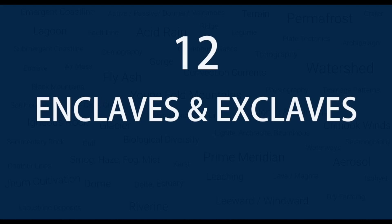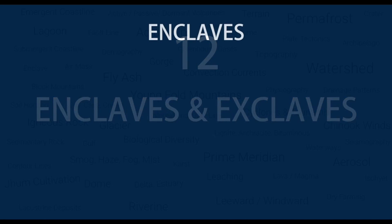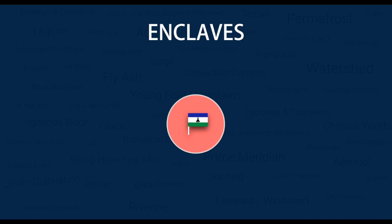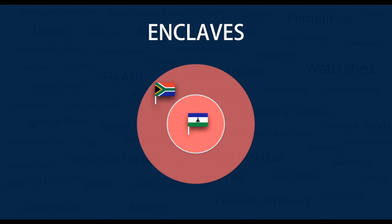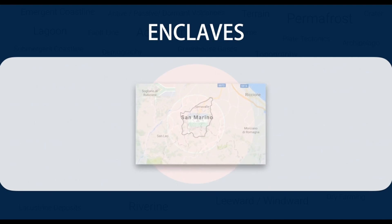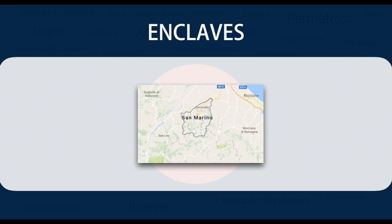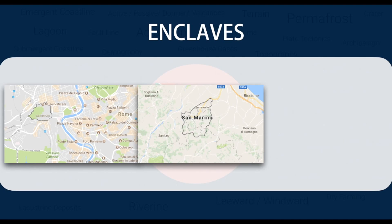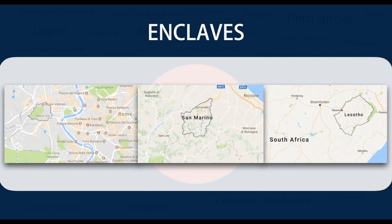Number 12 — Enclaves and Exclaves. An enclave is a territory or a part of a territory that is entirely surrounded by the territory of another state. There are only 3 nations in the entire world that are completely surrounded by another country: the Republic of San Marino, enclave within Italy; the Vatican City, enclave within the city of Rome in Italy; and the Kingdom of Lesotho, enclave within South Africa.